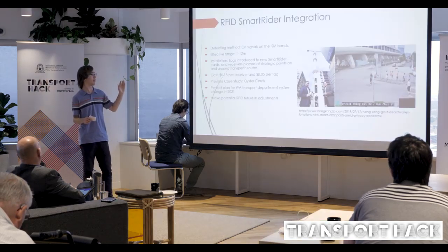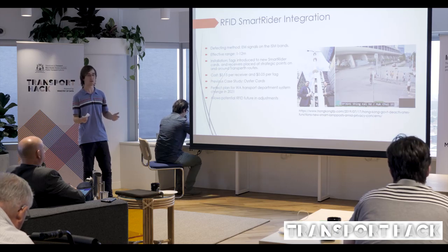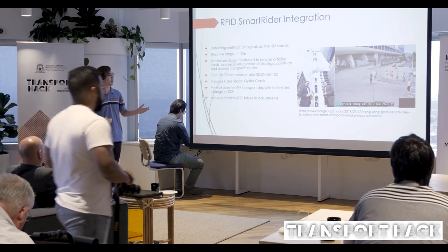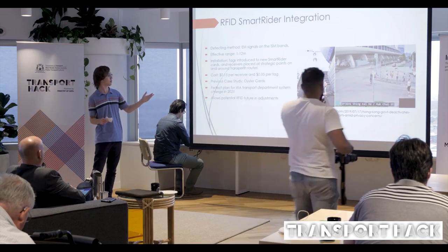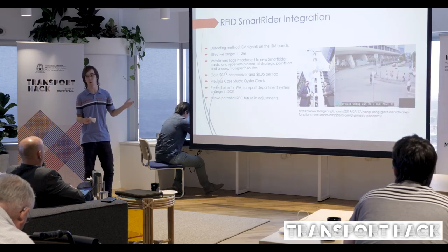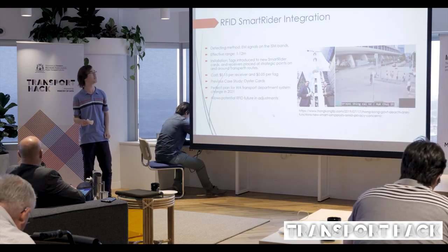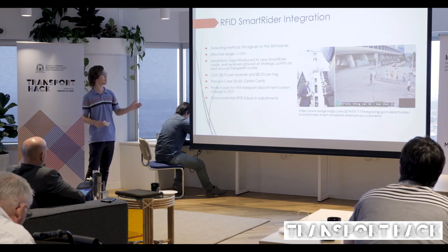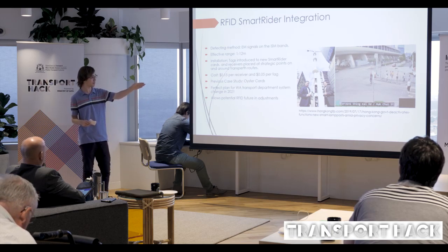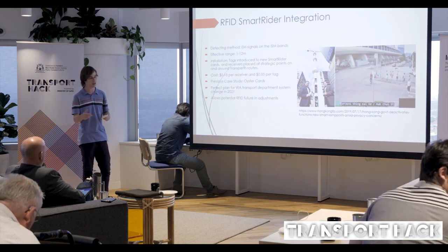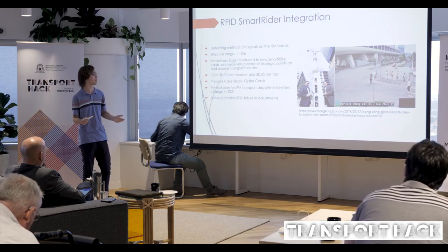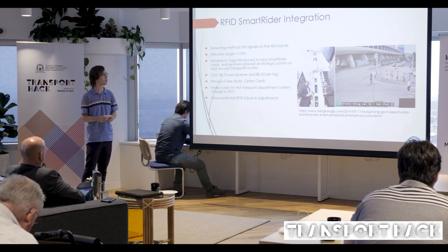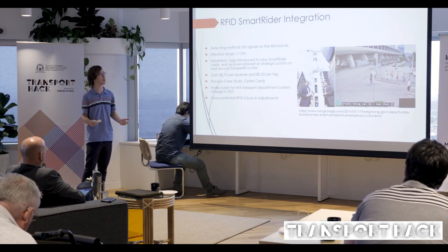This covers obtaining data sources. However, we could also try to optimize our collection through the various systems Transport already has. A new form of smart rider is being introduced in 2021, and we thought: what if certain adjustments were made? We were looking at RFID — radio frequency identification — already in place in Oyster cards. It is extremely cheap, and if we place sensor points at key intersection points all around Perth, we would be able to get more accurate data from Transport's patrons.